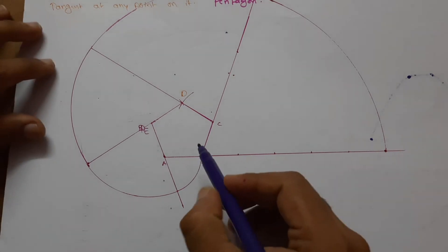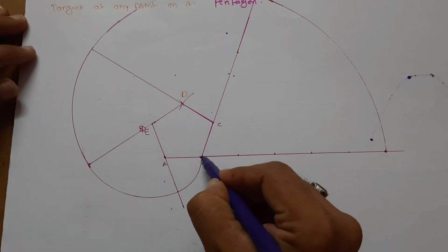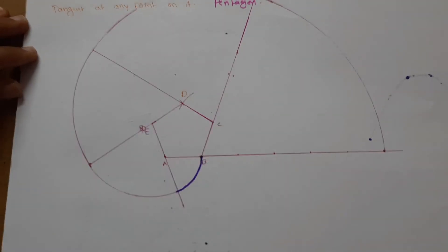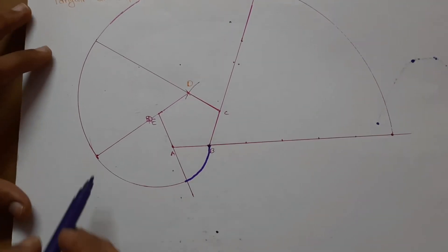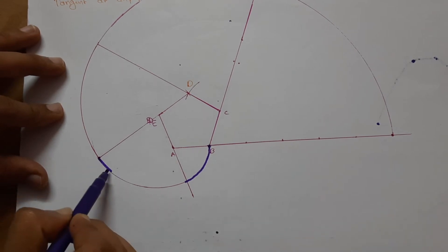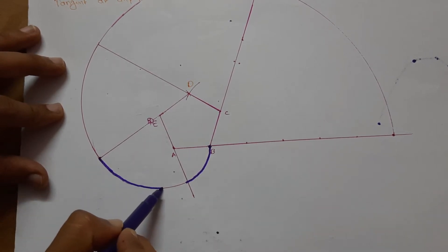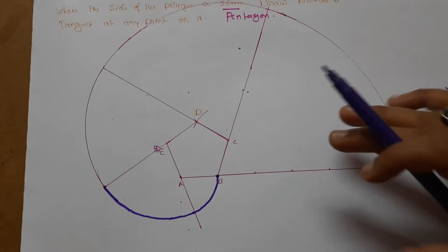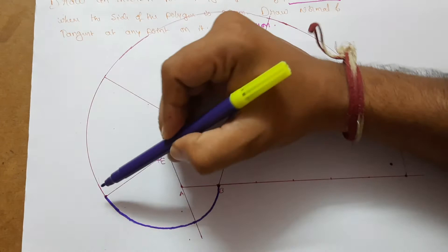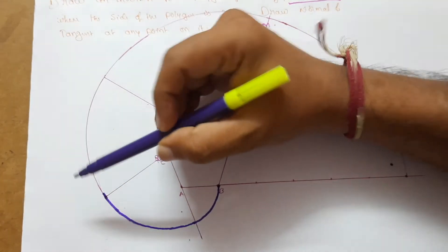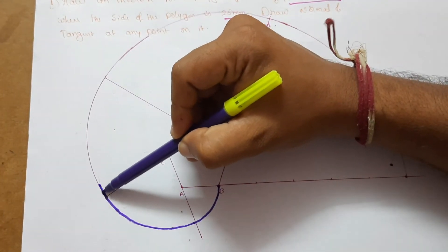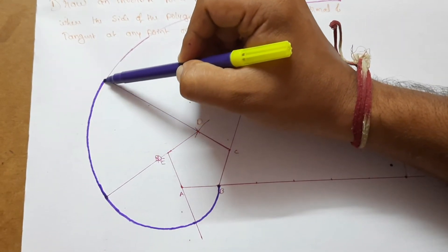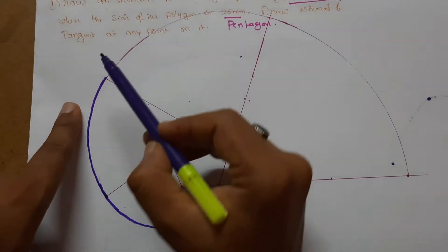I use a sketch pen here for demonstration purposes only, but you should not use a sketch pen. Use an HB pencil. Use French curves and draw — it is very simple.